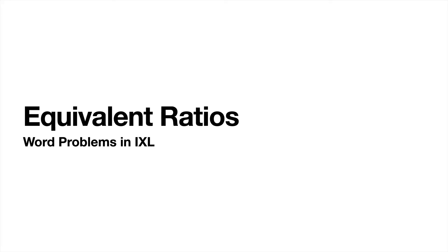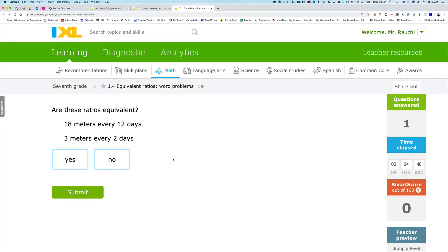Today we're going to talk about equivalent ratios using word problems at the website IXL. Are these ratios equivalent? 18 meters every 12 days and 3 meters every 2 days.